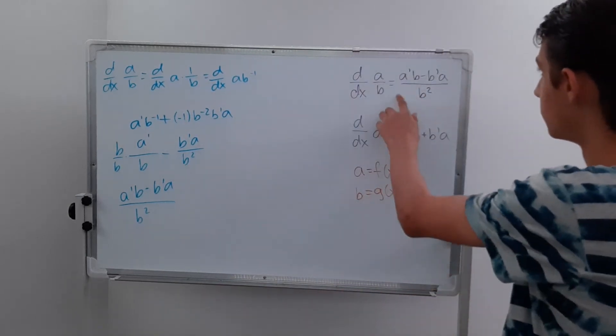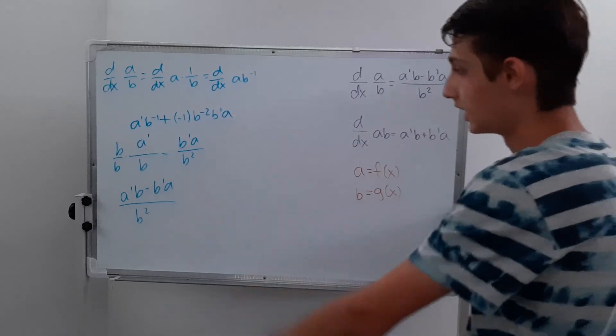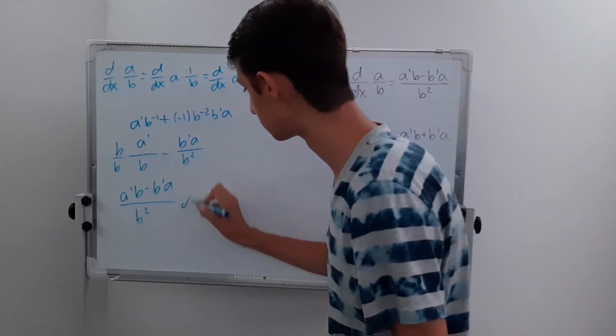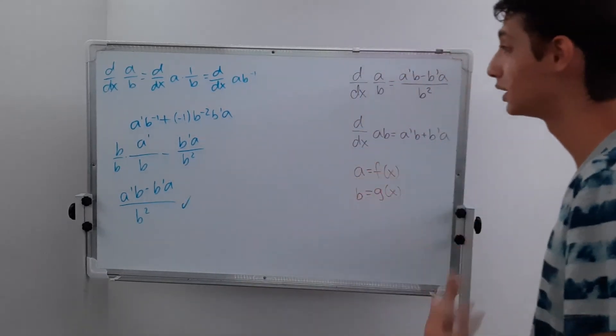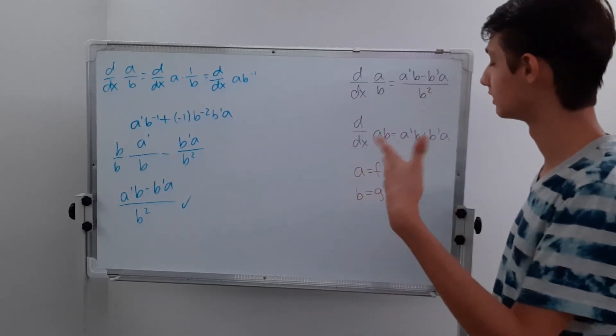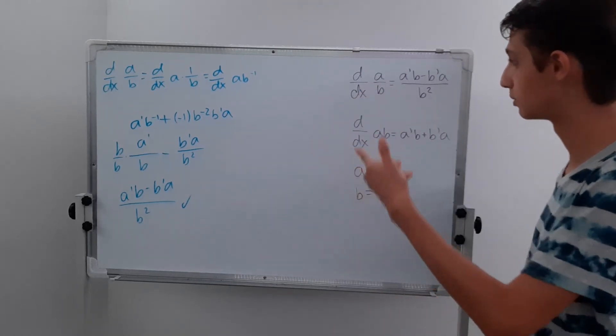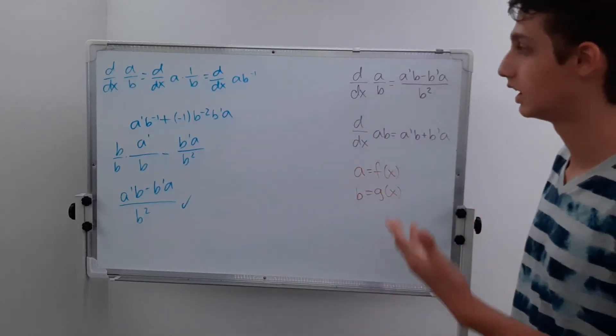And we have this, a prime b minus b prime a over b squared, and that is our quotient rule. So I'm just going to put a check mark that we completed the proof. And yeah, this is where the quotient rule comes from. It's just a rewritten product rule with some extra steps in a way that you can take the derivative of.